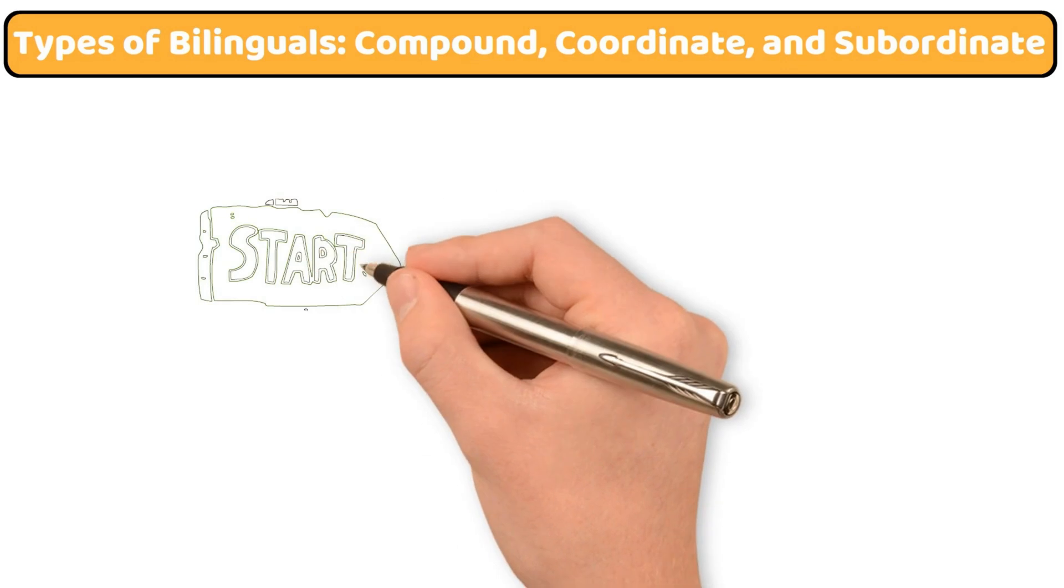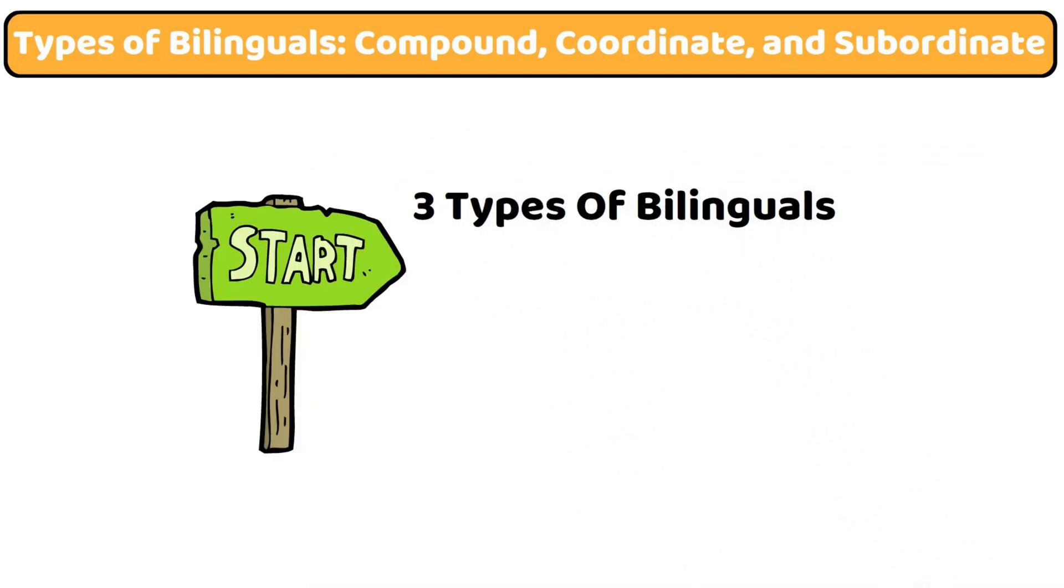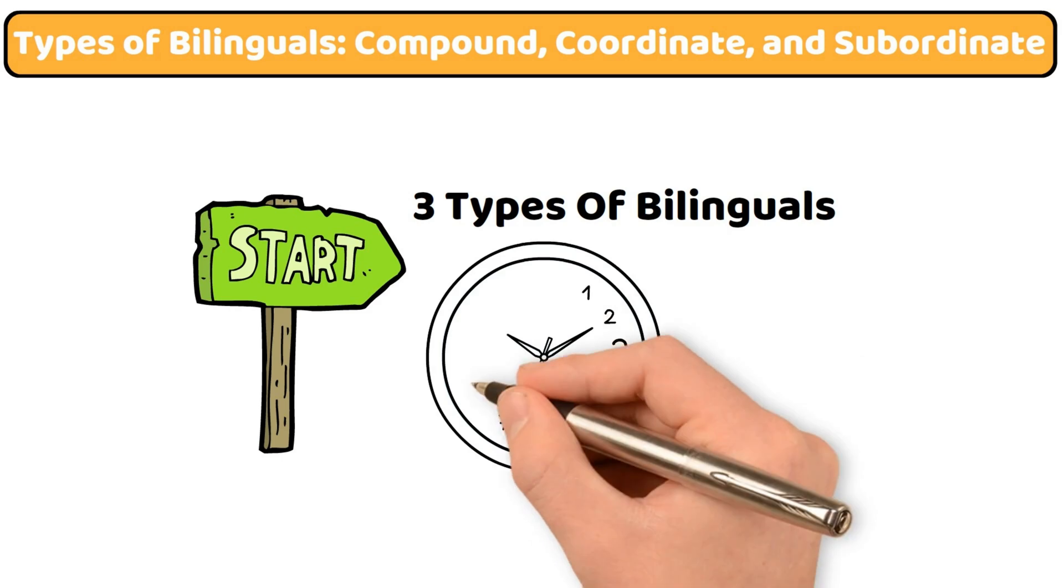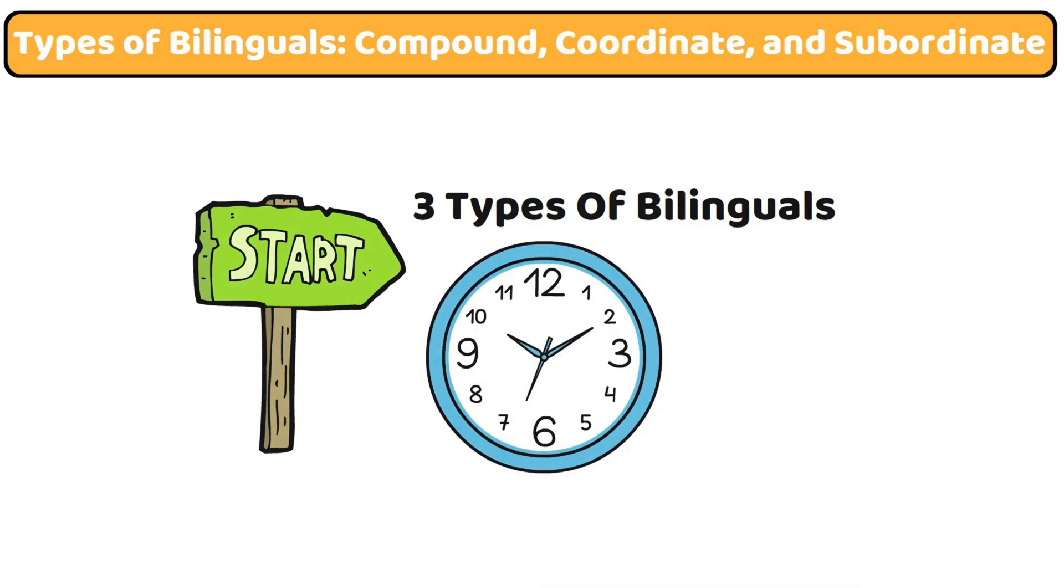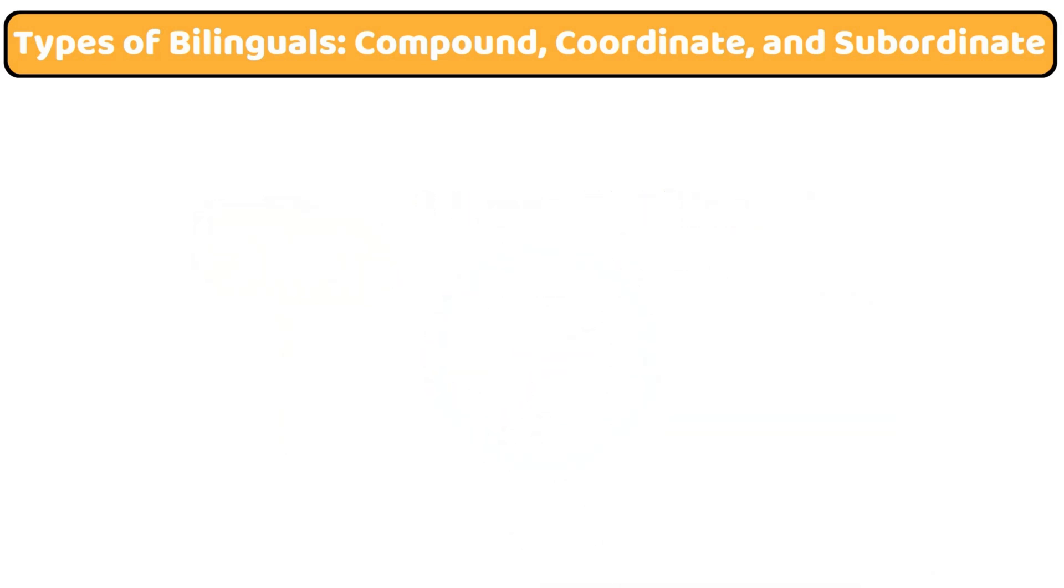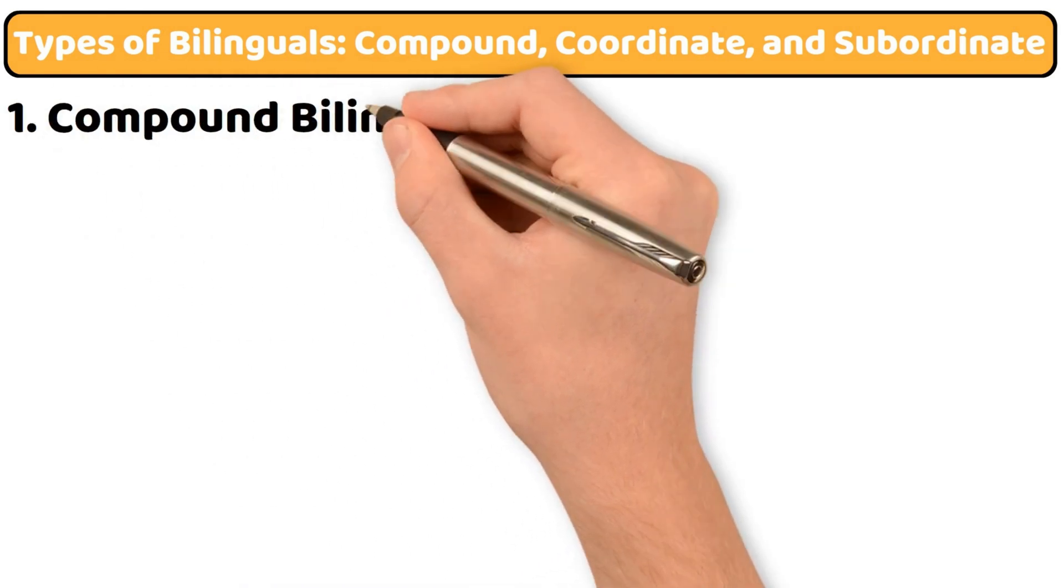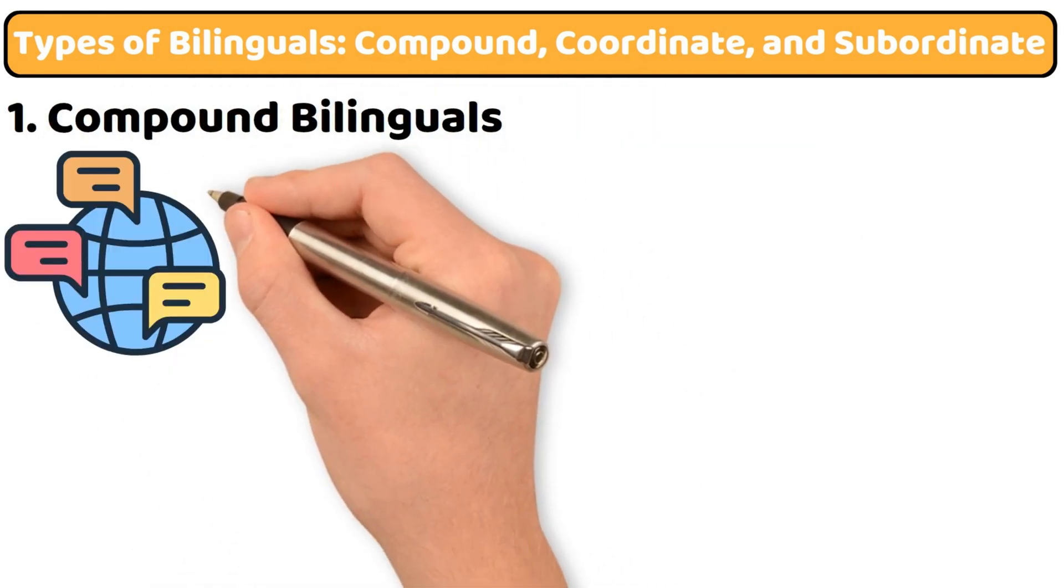Let's start with something fascinating, the three types of bilinguals, which highlight how the timing and context of language learning affect cognitive development. Compound bilinguals learn two or more languages simultaneously, often as children,